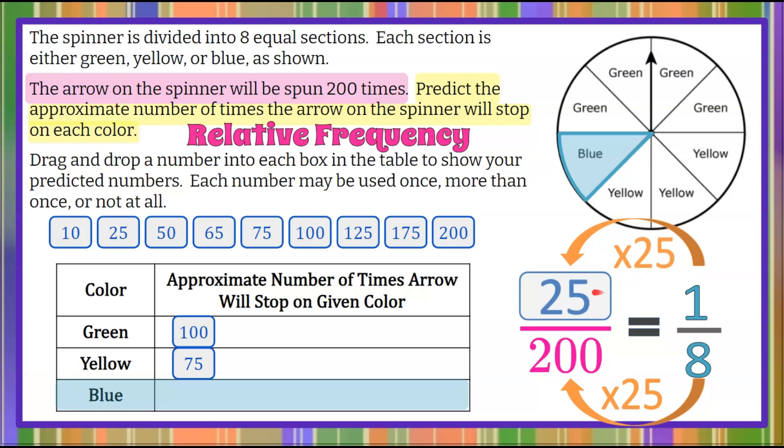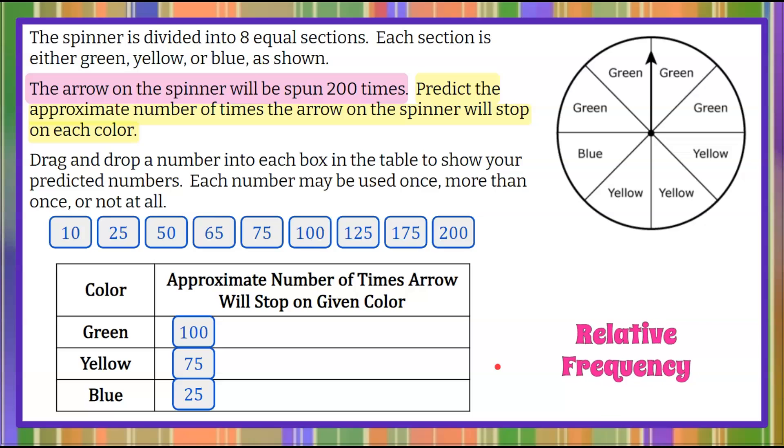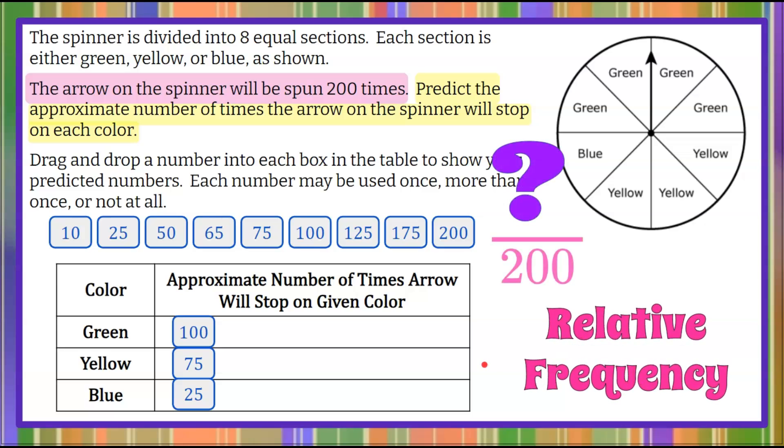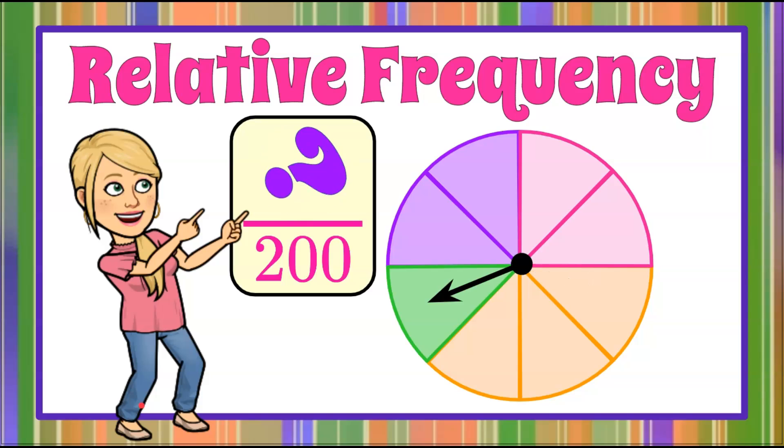So our relative frequency is 25 times out of the 200 spins. And there you have relative frequency using proportional relationships. We would expect out of 200, a hundred times we would land on green, 75 times on yellow, and 25 times on blue. And that is how you calculate relative frequency using probability.